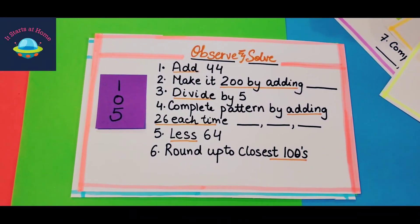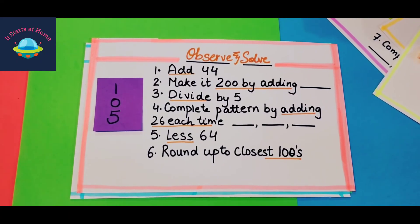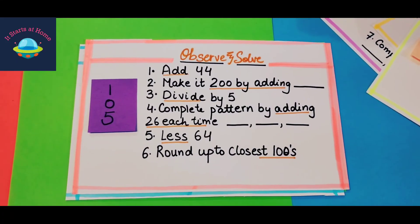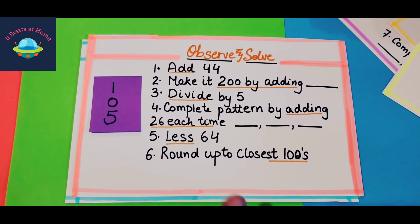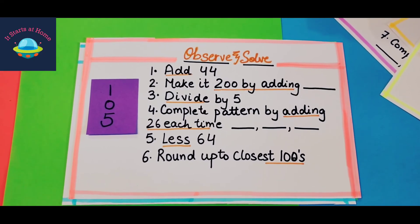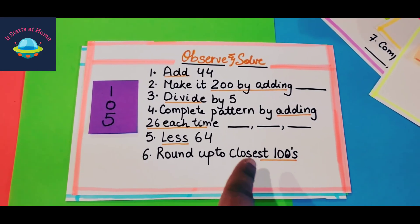Now we have 105. This says make it 200 by adding, add 44, divide by 5, make sure you subtract less is 64, round up closest 200. One thing you have to make sure is I'm not giving away a lot of things like less 64, I'm not saying minus, round up to closest hundreds.